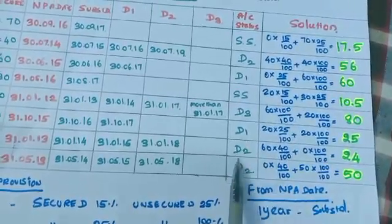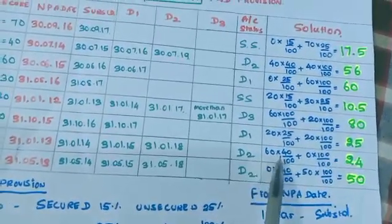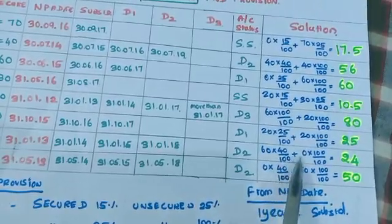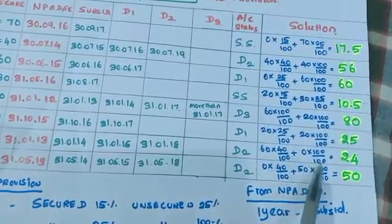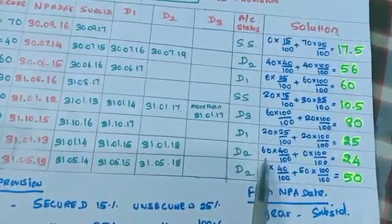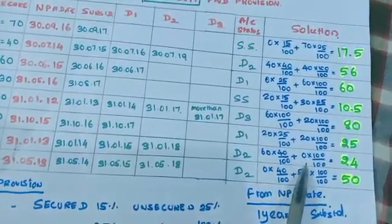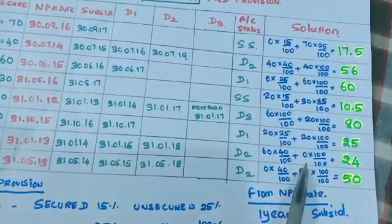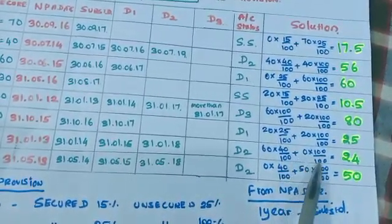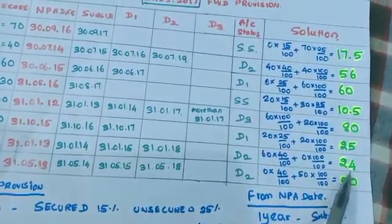The next account A7 is in D2 category. For D2, secured portion has a provision of 40% and unsecured portion is 100%. In our problem, the secured portion is 60 and unsecured portion is 0. So 60 × 40/100 plus 0 × 100/100 equals 24.